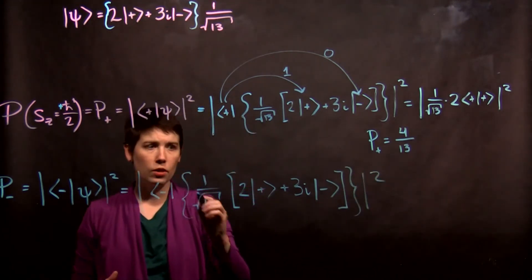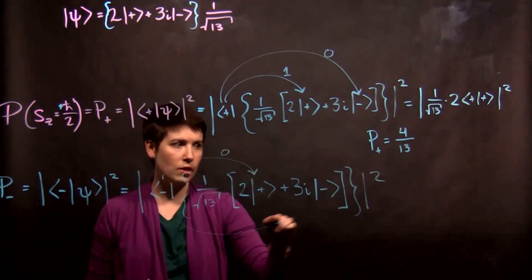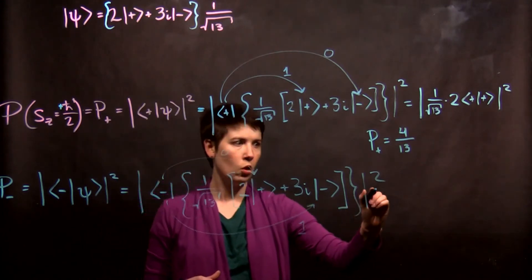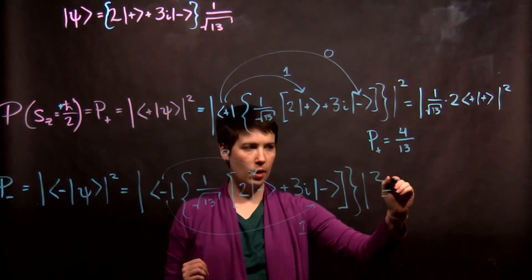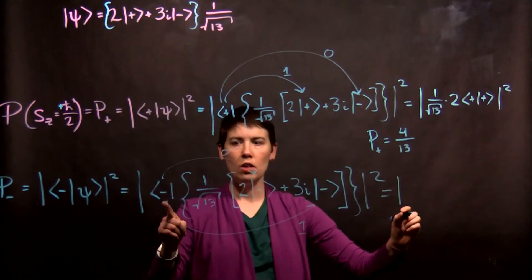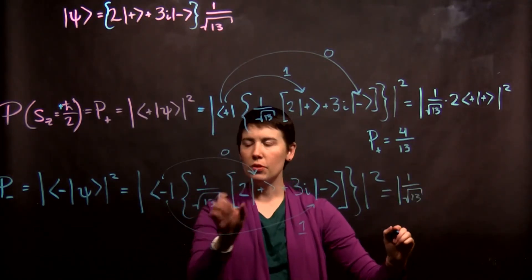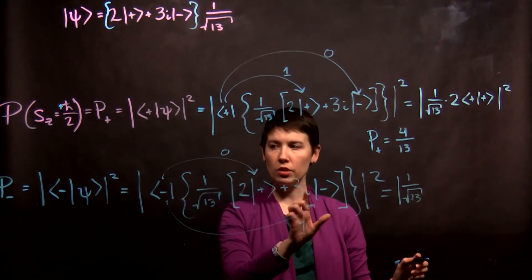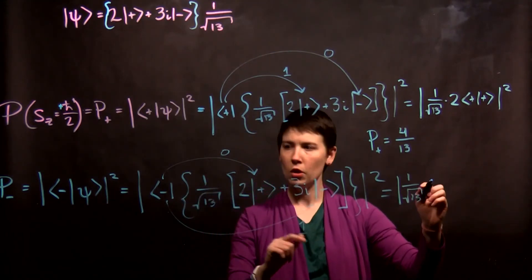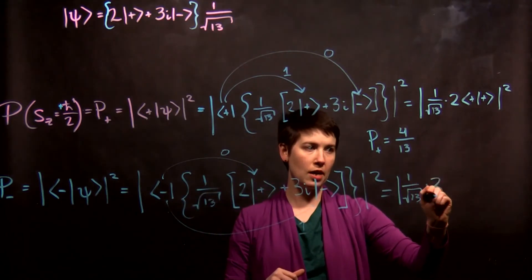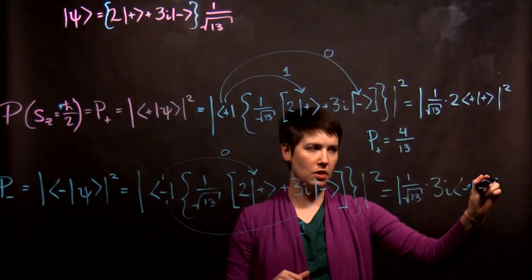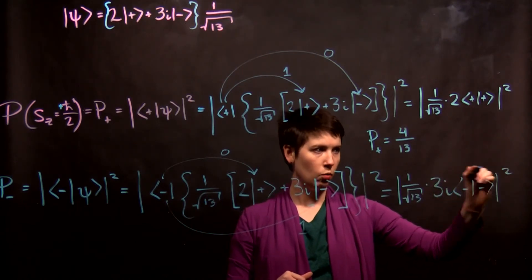Here we again have that. And so now, this is going to be 0, the second term is going to be 1. So skipping some steps for the sake of board space, we still have our 1 over square root of 13, but this first term is 0. So we only need to worry about this second term, which would be 3i, and then we have our minus, minus, which is going to give us that 1.